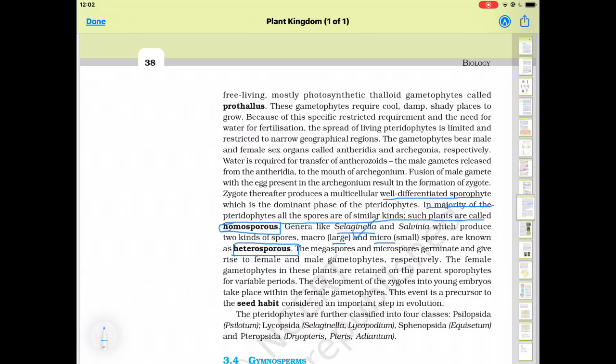The megaspores and microspores germinate and give rise to female and male gametophyte respectively in which the different type of spores are produced. The microspore give rise to male gamete formation of the male gamete and macrospore from the female part.